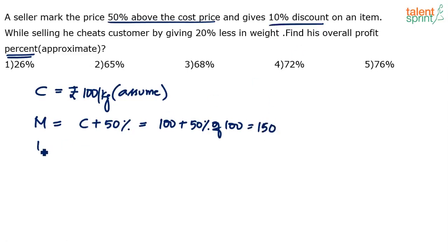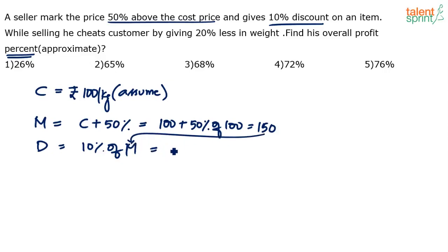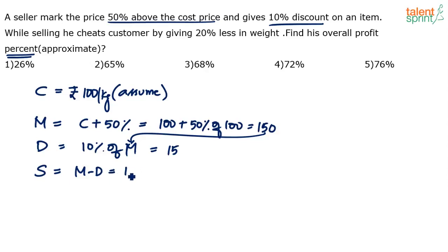He gives a 10% discount. Discount is always calculated on the marked price, so 10% of 150 is 15 rupees. The marked price is 150 rupees per kg, but he's giving a discount of 15 rupees. So the selling price is marked price minus discount: 150 minus 15 equals 135 rupees per kg.